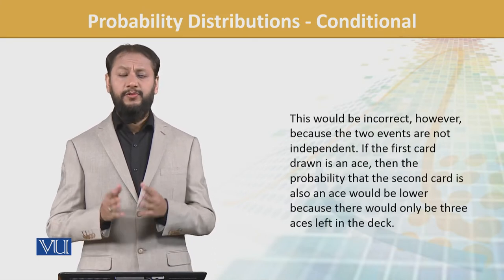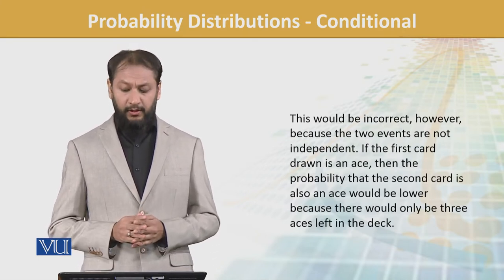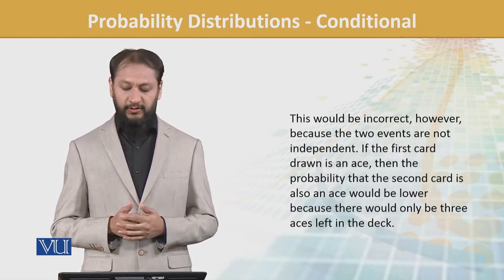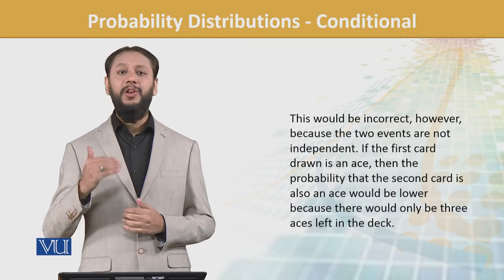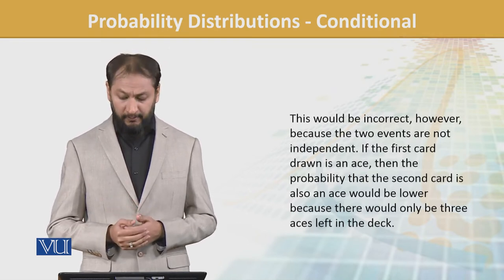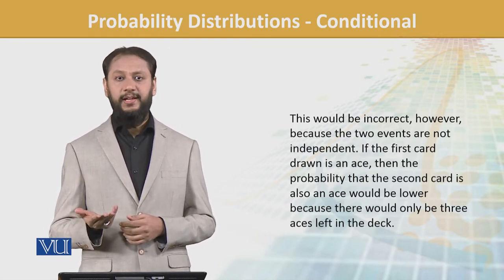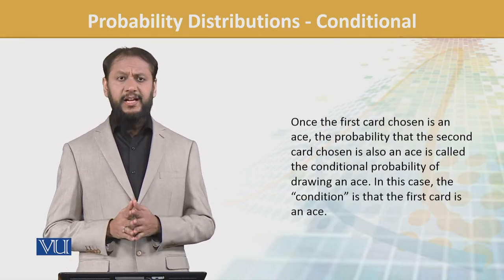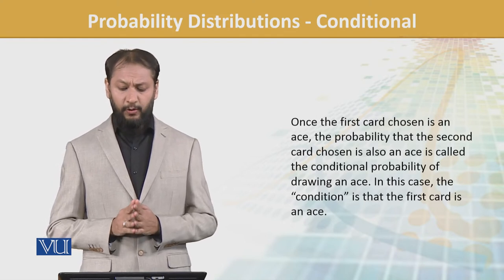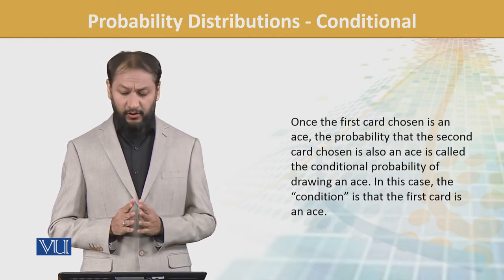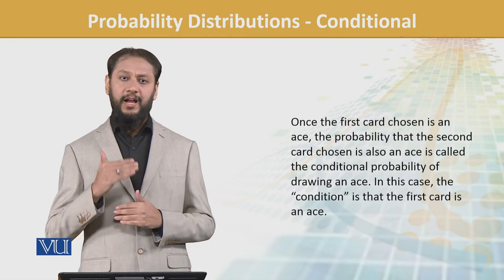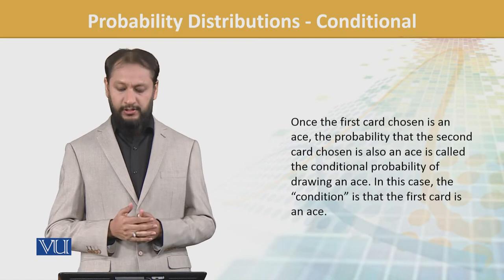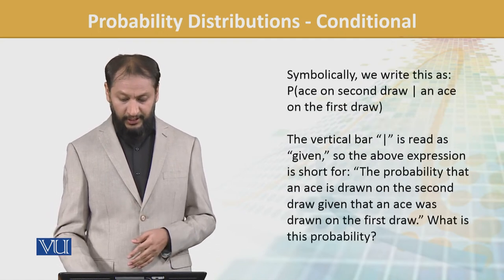This is incorrect because the two events are not independent. If the first card is an ace, then the probability of the second card being an ace would be lower because now there will be three aces left and the total number of cards will also be less. Once the first card chosen is an ace, the probability of the second card is called conditional probability.